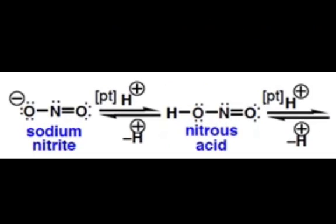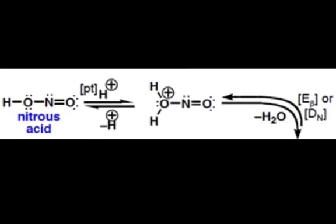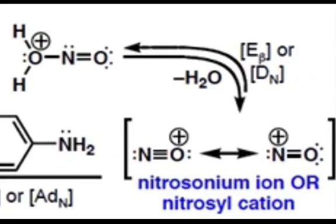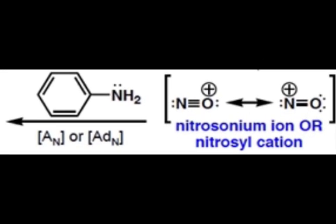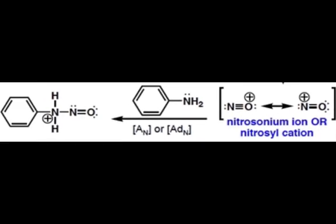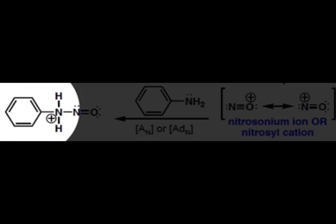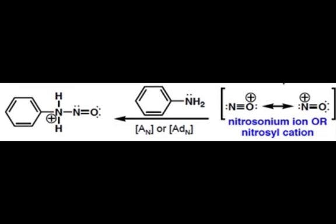First, protonation of the nitrite yields nitrous acid. Water is then eliminated to yield the nitrosonium ion, or the nitrosyl cation. Aniline then enters into the mechanism by nucleophilic attack. Comparing this intermediate with the product, you can see the atoms that need to be removed to reach our target.